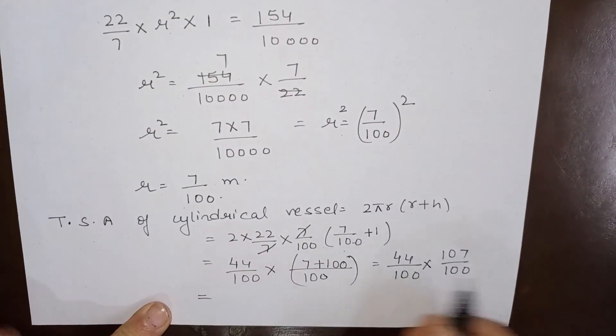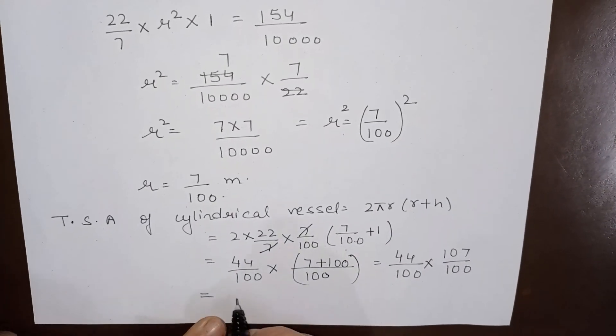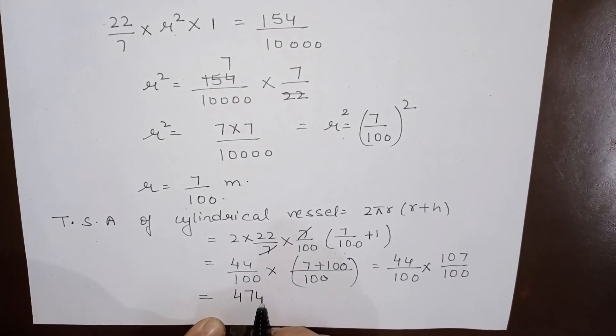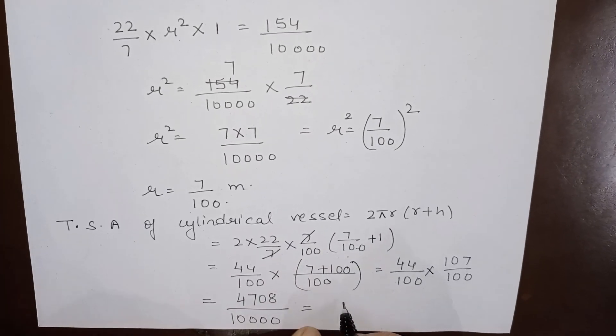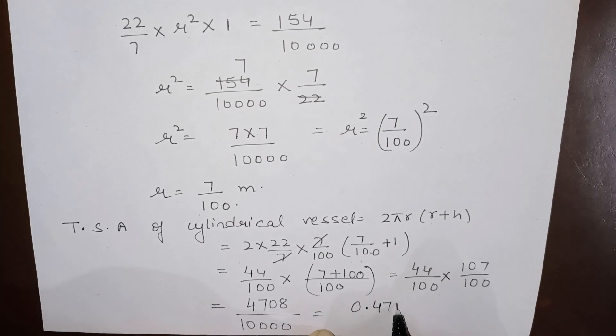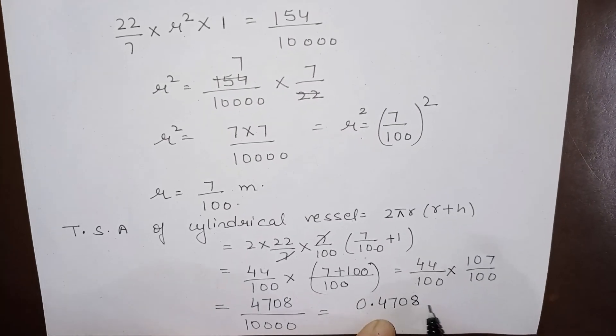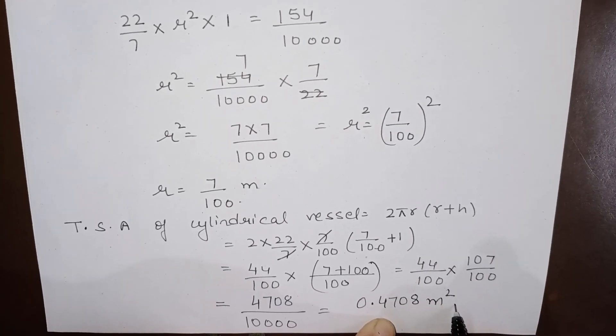When 44 is multiplied by 107, we get 4708 over 10,000. So that is 0.4708 square meters, which is the answer.